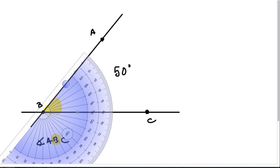So it doesn't matter which line we start with, line AB or line BC. When we measure starting from zero up to the other line, in this case here we get a 50 degree angle.